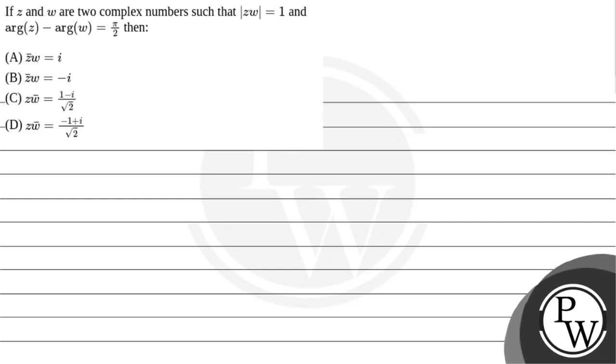Hello Bacho, in this question it is given that if Z and W are two complex numbers such that modulus of ZW is equals to 1 and argument of Z minus argument of W is equals to pi by 2, then we have to choose which of the following is correct.